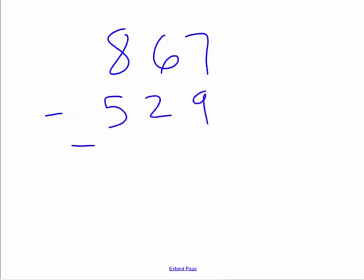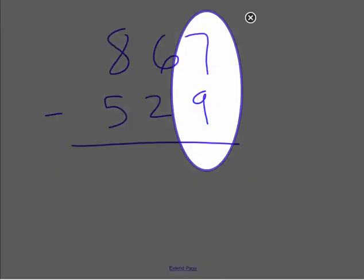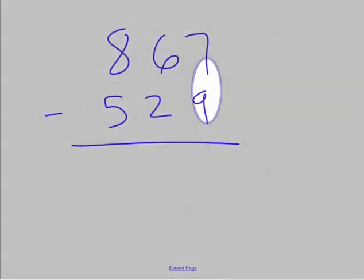For instance, if we had the problem 867 minus 529, we would first start in the ones column and ask ourselves: Can I take 9 ones away from 7 ones? No, I can't.